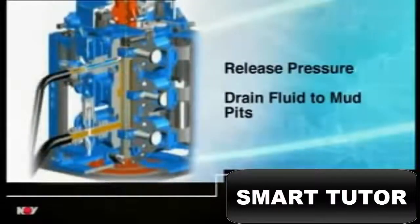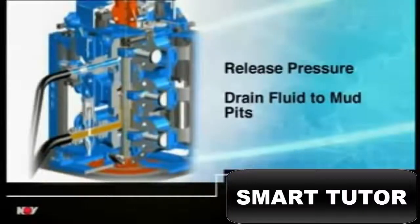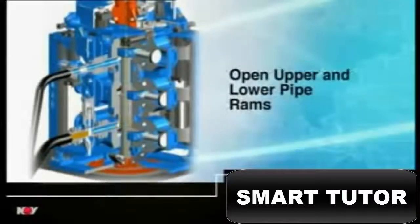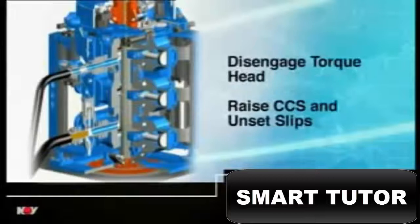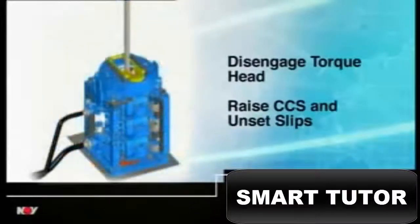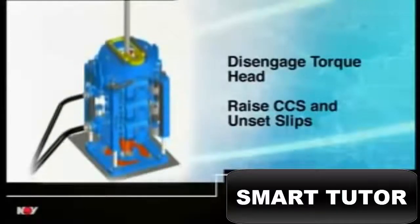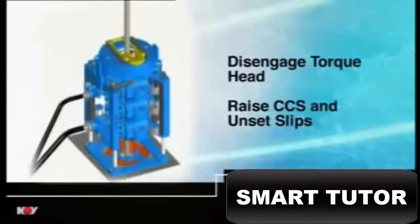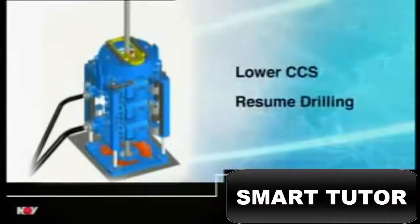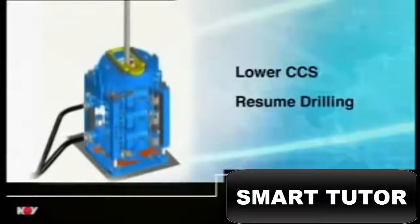Pressure in the chamber is released, and the fluid drained back into the mud pits. The upper and lower pipe rams are opened. The snubber head disengaged from the new stand, and the unit raised from the rig floor, to unset the slips, which fold away horizontally. The unit is then lowered back to its resting position, and drilling resumes.